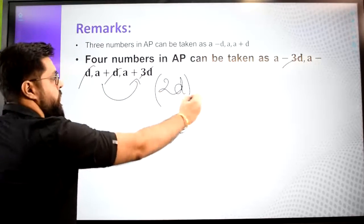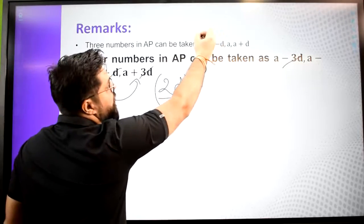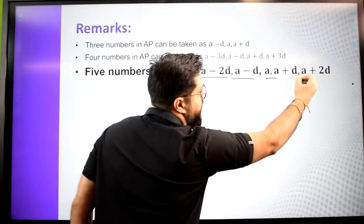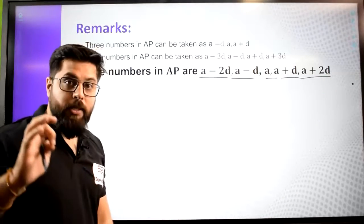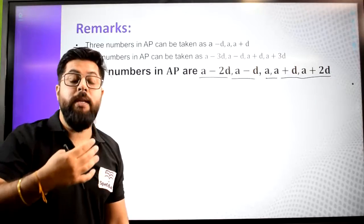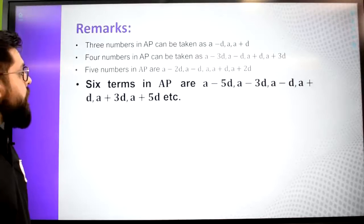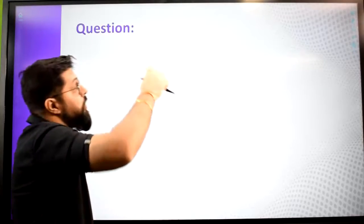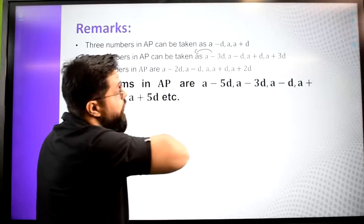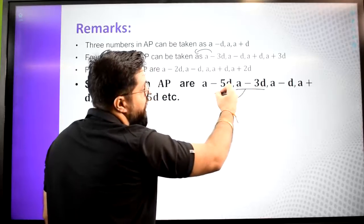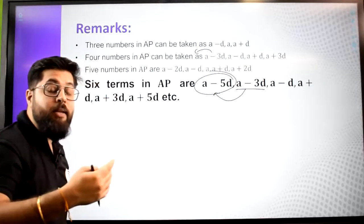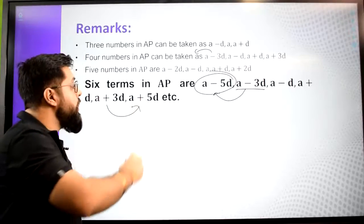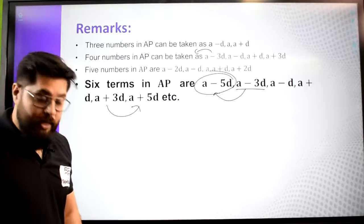Similarly, if we need to take 5 terms, we extend the 3-term form by one step forward and one step backward. So the 5 terms will be a minus 2d, a minus d, a, a plus d, a plus 2d. We use this when we are given that the sum of the terms is some value. For 6 terms, we extend the 4-term form. The term before a minus 3d will be a minus 5d because we subtract 2d (the common difference). Similarly, we add 2d to get the last term.